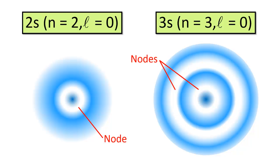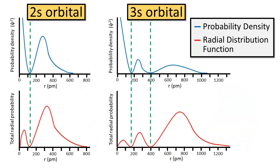Nodes are regions of space where the wave function, and therefore the square of the wave function that we call the orbital, pass through zero. There is zero probability of finding the electron in a node. But why do nodes exist?